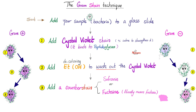Step two: add an alcohol to try to decolorize the bacteria — to wash out the purple stain. The gram-negative will lose the purple color, meaning you have successfully washed it out. However, the gram-positive bacteria, thanks to their very thick peptidoglycan cell wall, will retain the crystal violet.